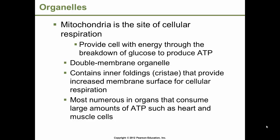Mitochondria is the site of cellular respiration. The mitochondria provide the cell with energy through the breakdown of glucose to produce ATP. The mitochondrial number from cell to cell roughly correlates with the cell's energy demand — most cells contain several hundred to thousands. They contain interfoldings called cristae, which increase the membrane surface area for cellular respiration. Mitochondria are most numerous in organs that consume large amounts of ATP, such as the heart.